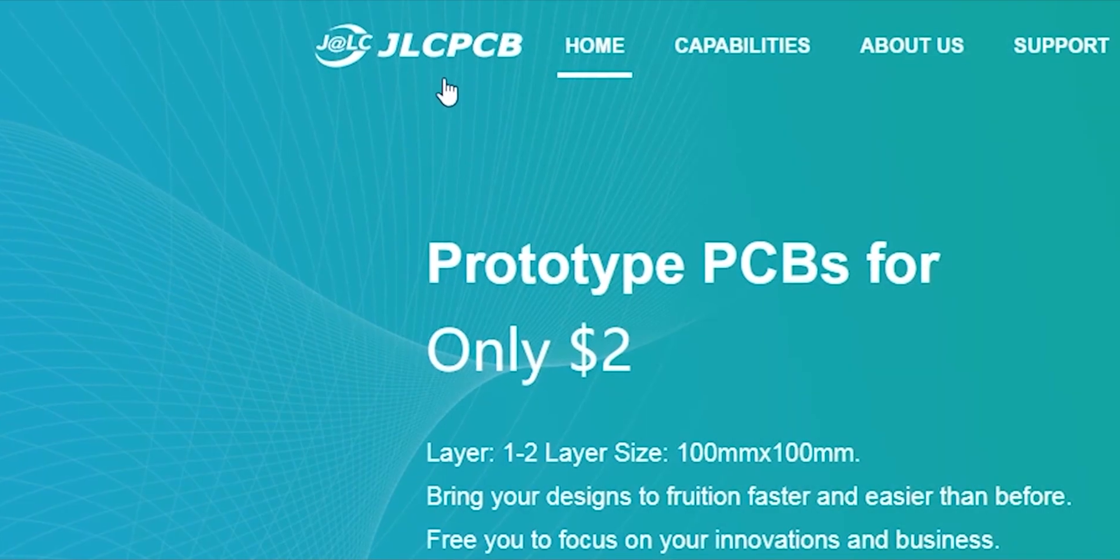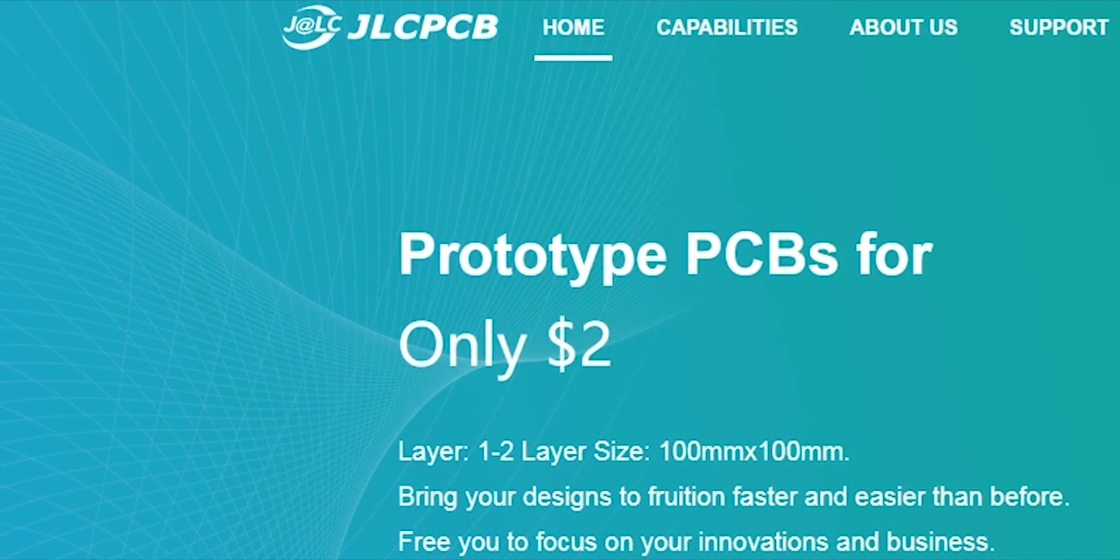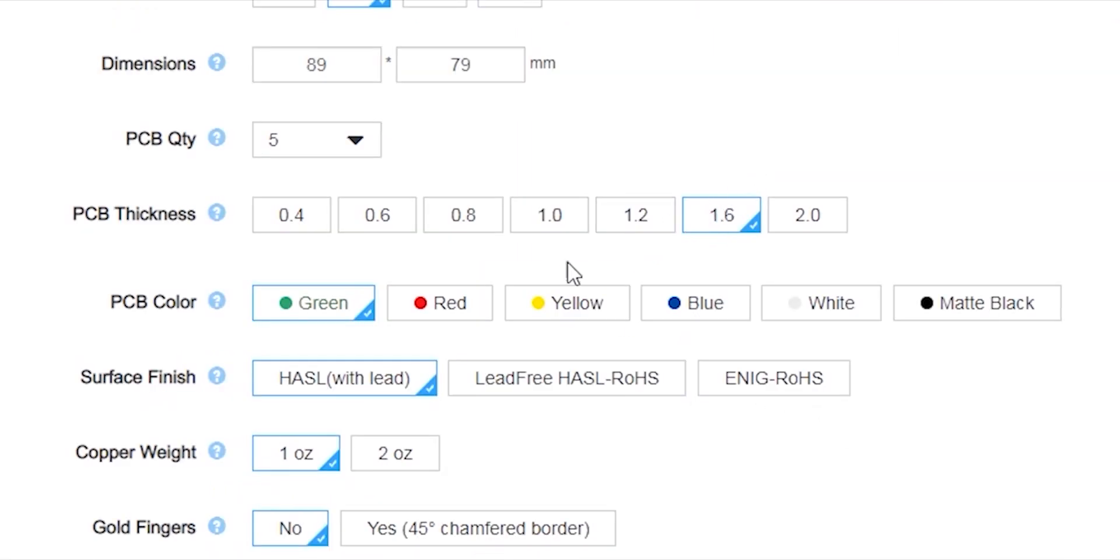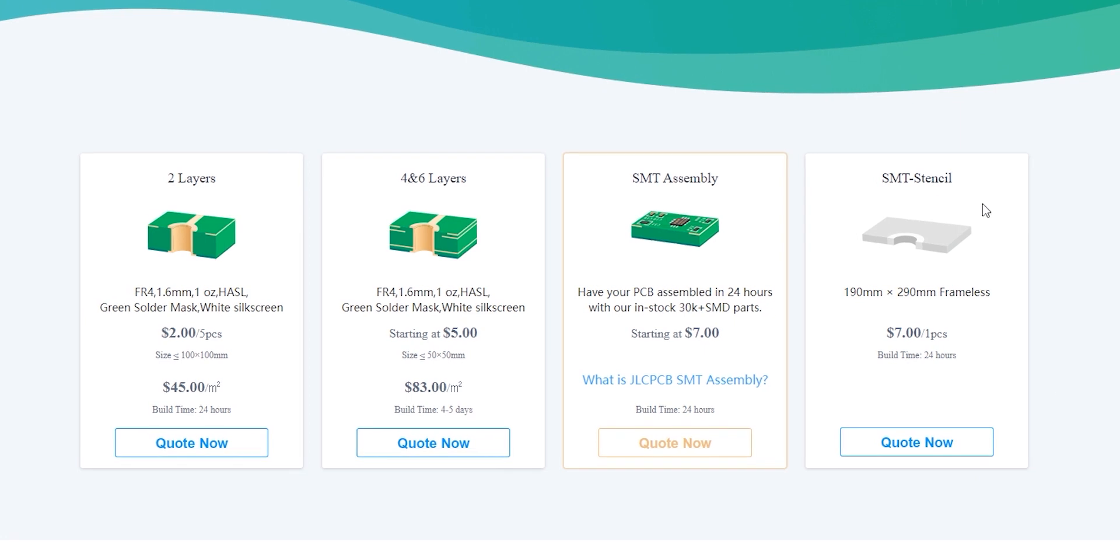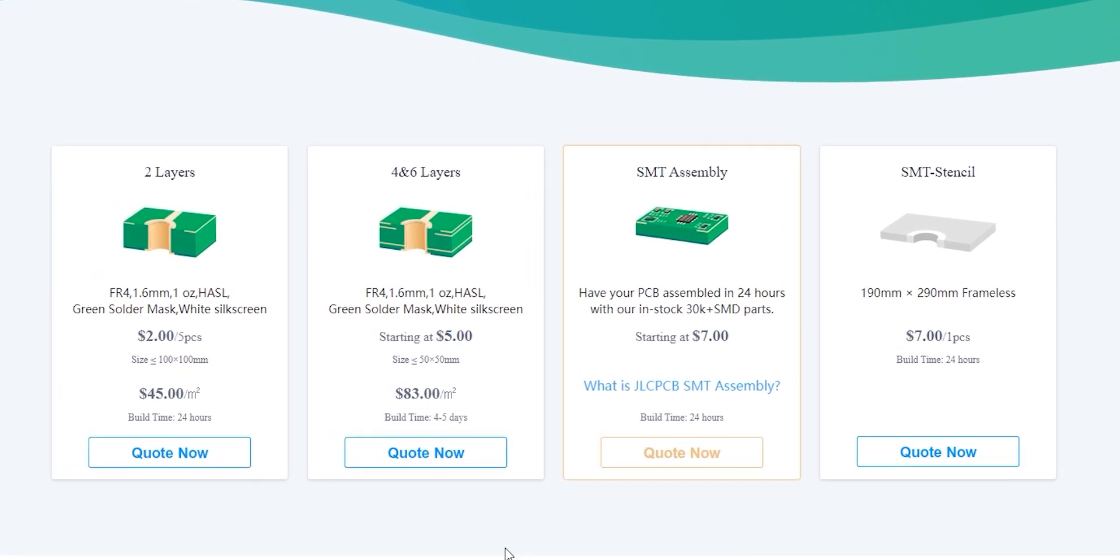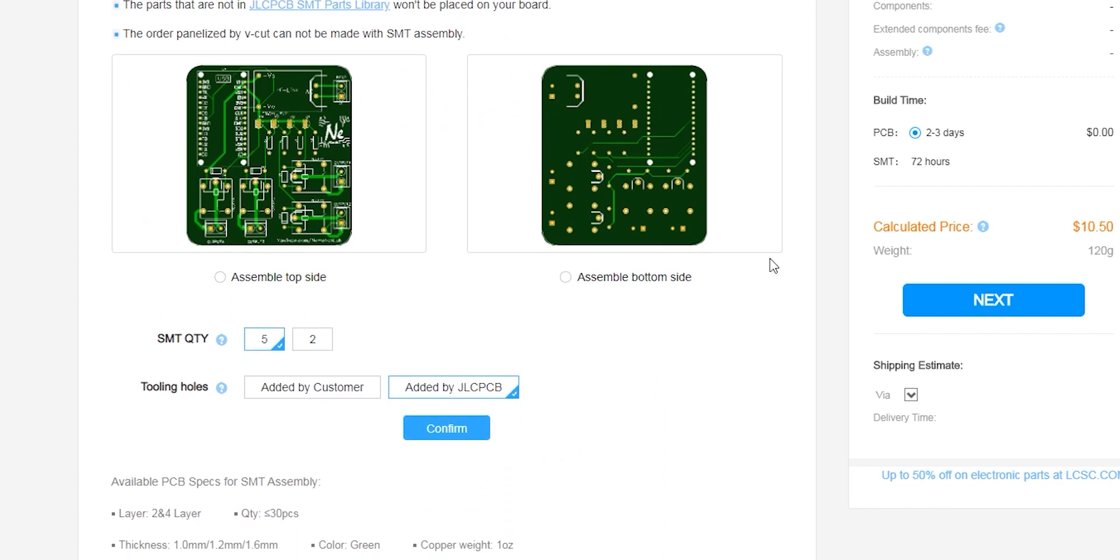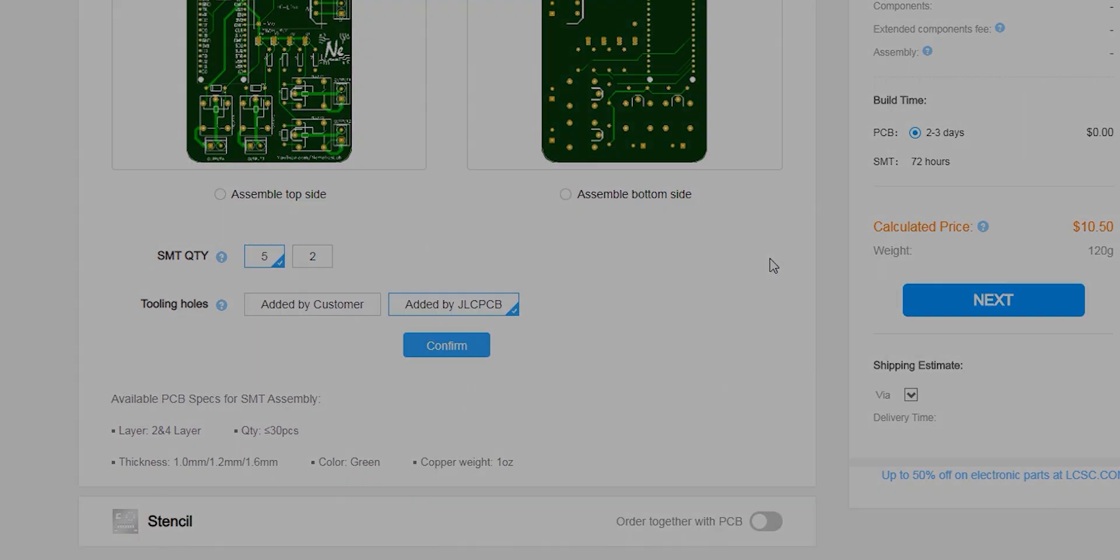This video is sponsored by JLCPCB. From them you can order your PCBs only for $2. Just upload your Gerber files to their website and then you can choose any color solder mask for the same price of $2 which is sweet. They offer service for 2 layer, 4 layer and 6 layer PCB. You can also order your SMD stencil along with your order. Now they have even started the PCB assembly service only for $7. So click the first link in the video description to learn more.